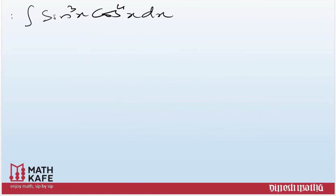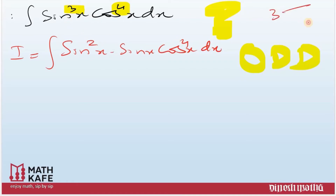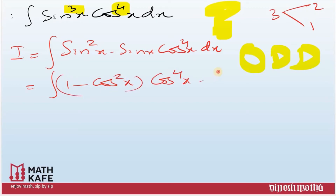Next example: ∫sin³x · cos⁴x dx. Now there's a confusion - there's an odd power and an even power. Which method do we use? Whenever an odd power exists, always go with the odd power approach. If you have two terms and one power is odd, always use the odd approach. Same technique: write sin³x as sin²x · sinx · cos⁴x dx, splitting the odd power.